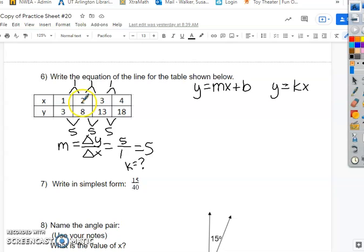So 4, 3, 2, 1, 0. 18 minus 13 is 5. 13 minus 8 is 5. 8 minus 3 is 5. 3 minus, well, I know that that is not 0, right? So 3 minus 5, hopefully you know that's negative 2.